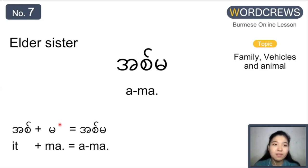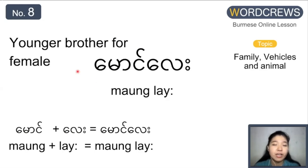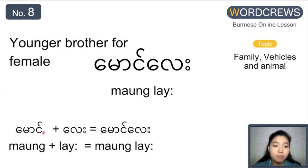Next one is elder sister. Similarly with elder brother, we start with it — spelled it. And the next one is the ma alphabet. So it ma is how it's spelled, but we pronounce a ma. Next is younger brother for female, which is mao le. The first word is mao and the second is li. Here is the ma alphabet and the ao symbol, then la alphabet and the a symbol. So mao le.